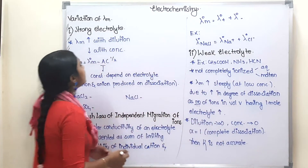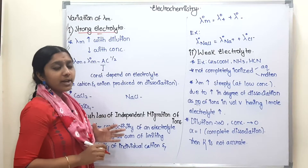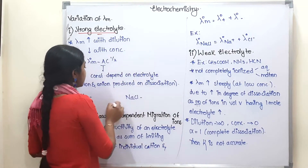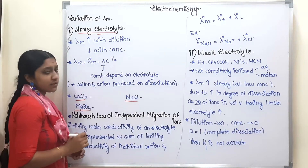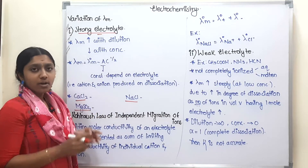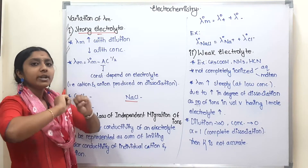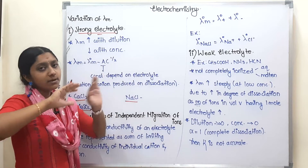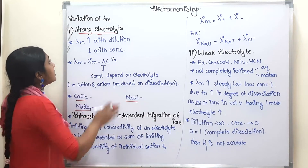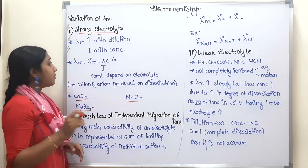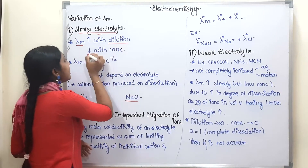Now we are going to see the strong electrolyte. For example, CaCl₂, NaCl, MgSO₄ — these are strong electrolytes. For a strong electrolyte, it will dissociate into positive ions and negative ions. If it is a strong electrolyte, molar conductivity increases with dilution, or decreases with concentration.